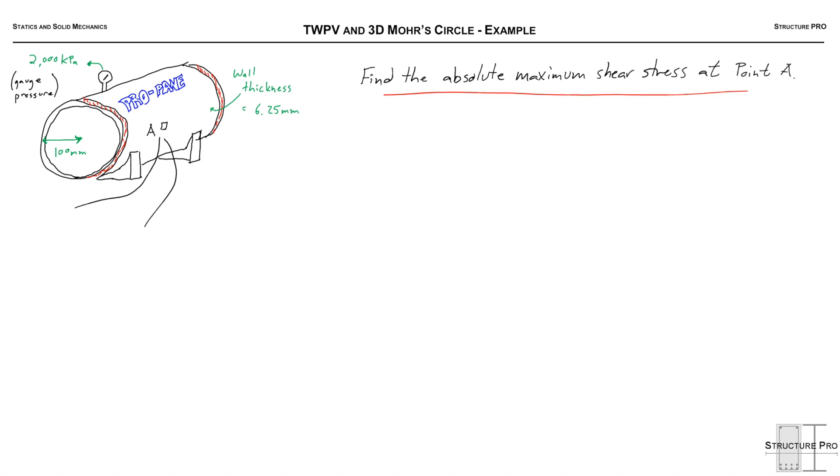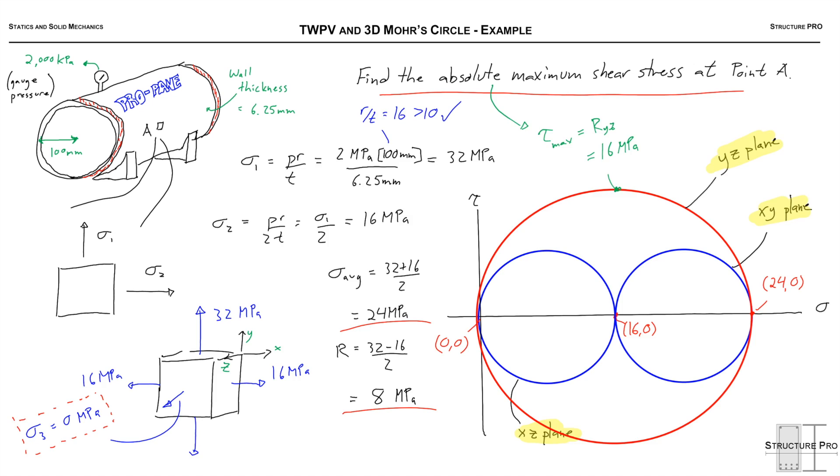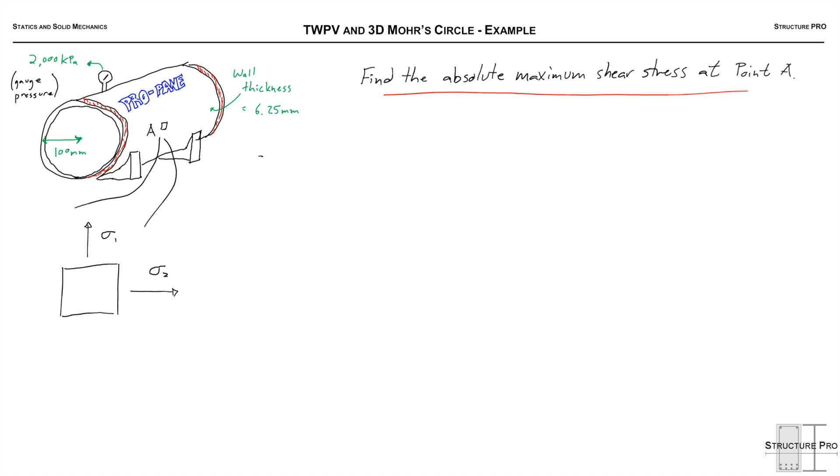We're asked to find the absolute maximum shear stress at point A. We can pull point A out of the propane tank and draw it with a sigma 1 and a sigma 2. We know this is a plane stress condition. You can go back to the video on thin-walled pressure vessels for the derivation.